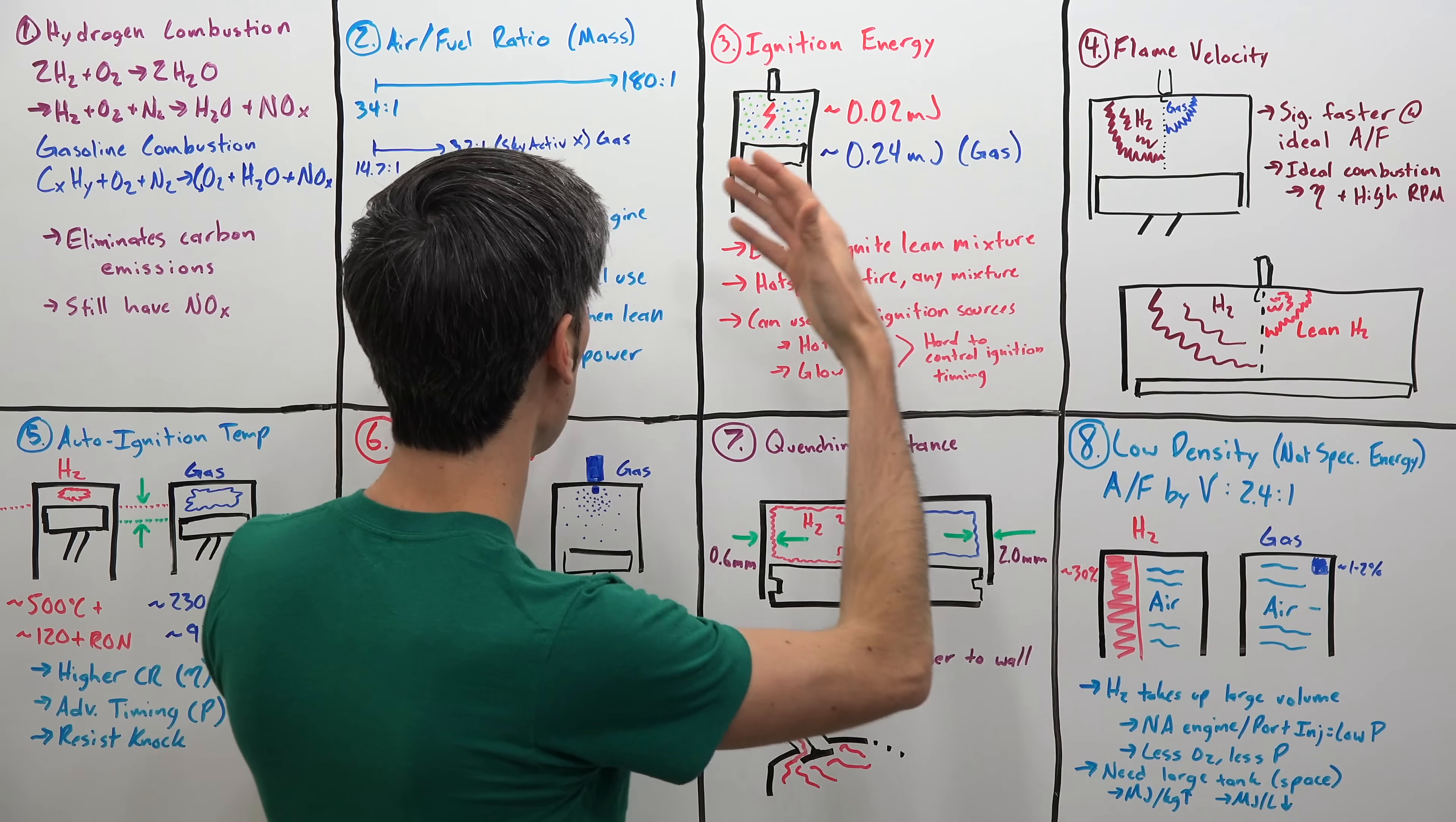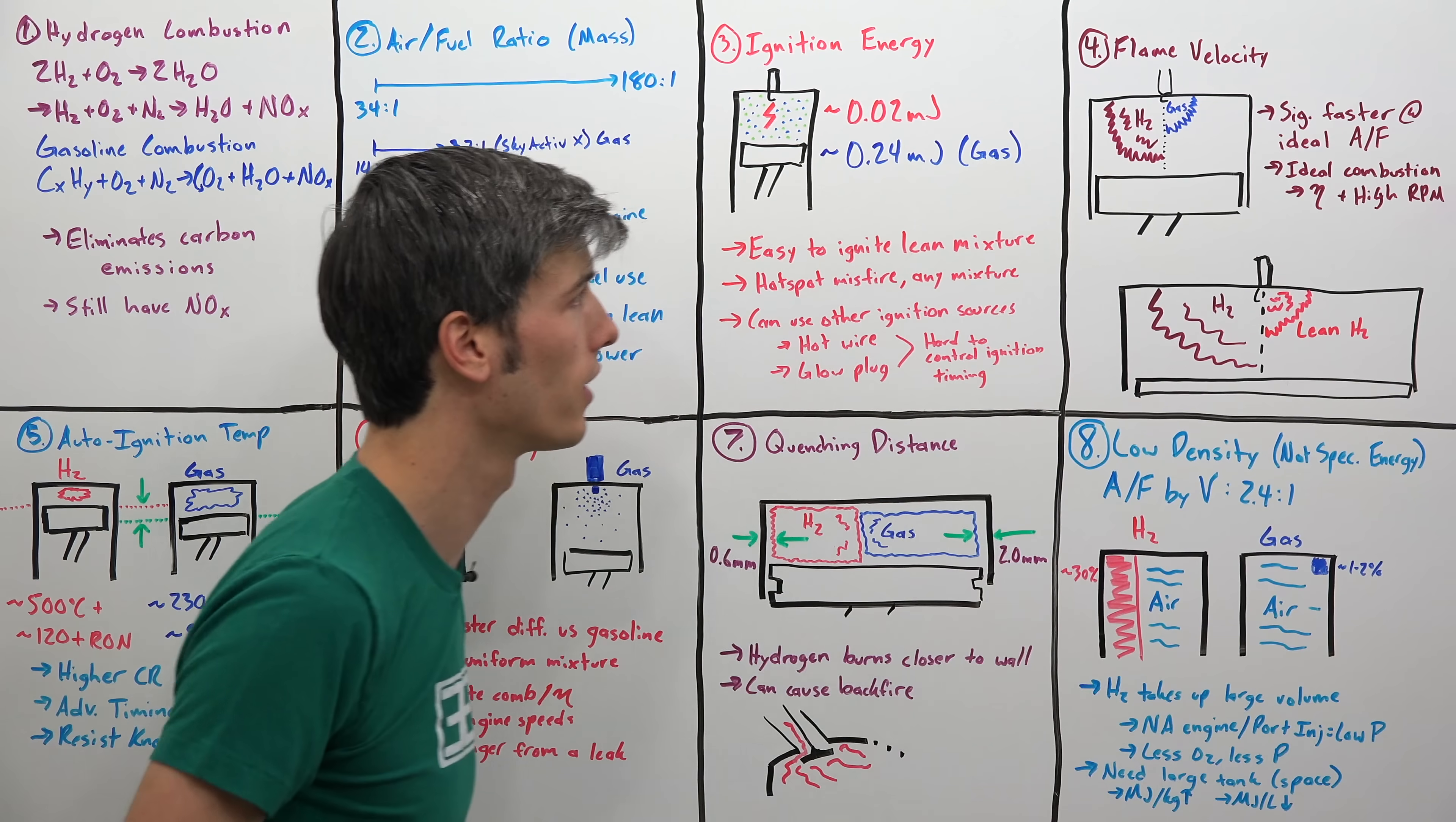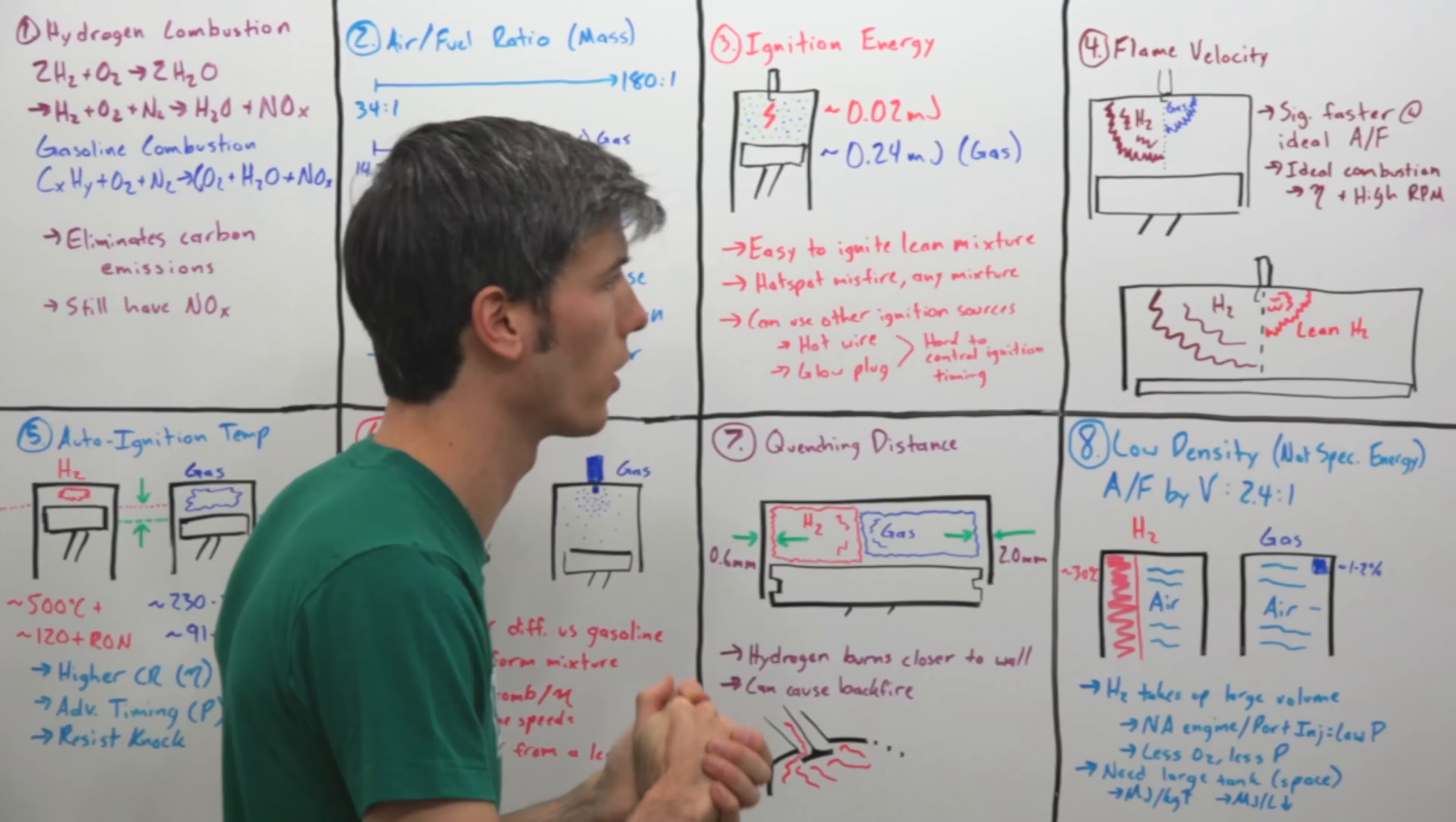Now, unfortunately, there's another drawback. So we want to run lean, right? Because that's efficient and it means we won't have as many nitrogen oxide emissions. But unfortunately, by running lean, you then start to reduce that flame velocity quite a bit. So it does have a very high flame velocity when you're operating at that stoichiometric ratio of 34 to 1, about 34 to 1. But unfortunately, once you start getting towards this leaner end, combustion does take significantly longer.